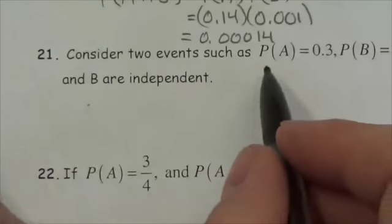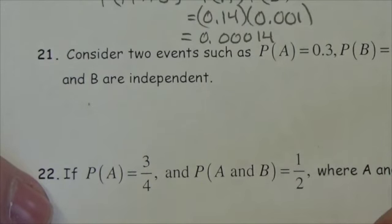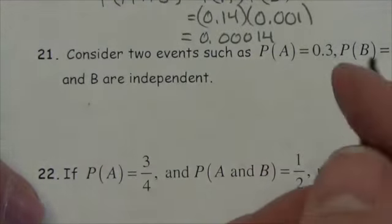Consider two events such that the probability of A is 0.3, the probability of B is 0.4, and the probability of A or B is 0.58. Comment on whether the events are independent.